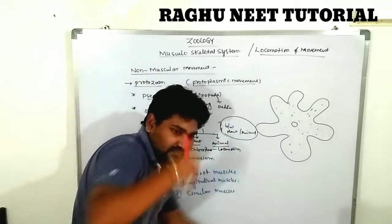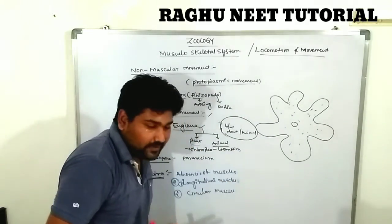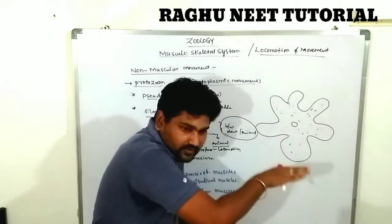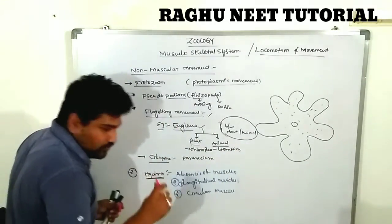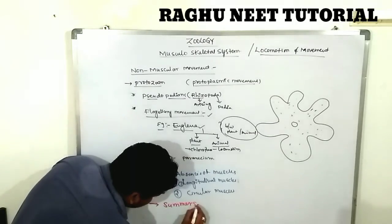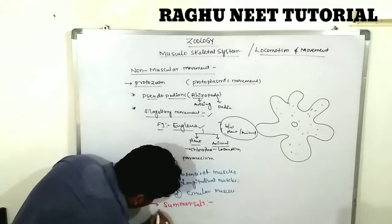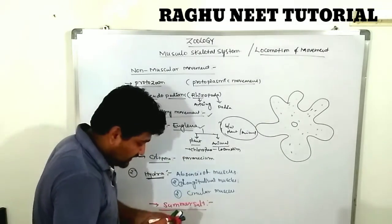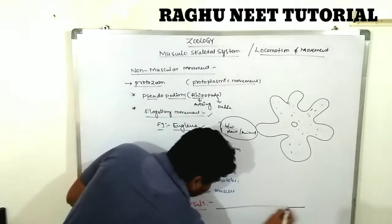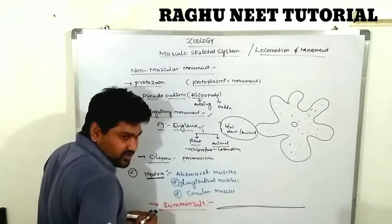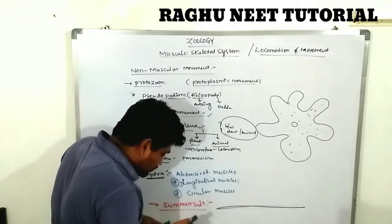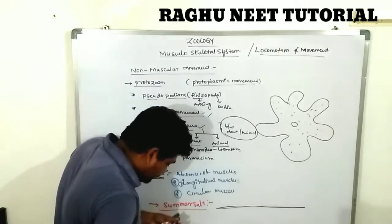The movements shown by hydra are: somersault movement, looping movement, and walking movement. These three are movements, not locomotion. The first one is somersault movement.